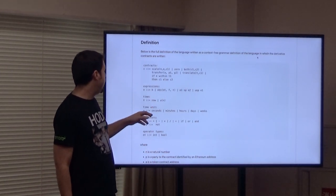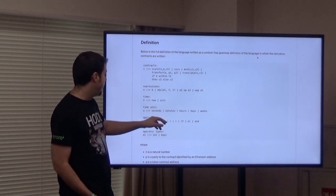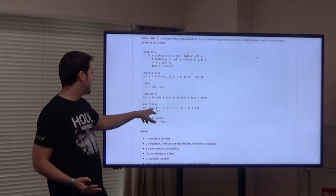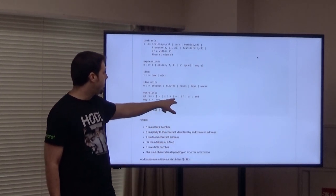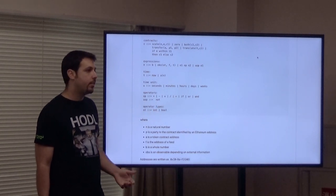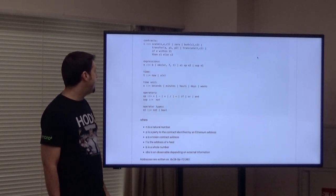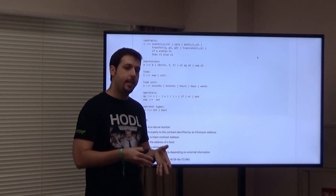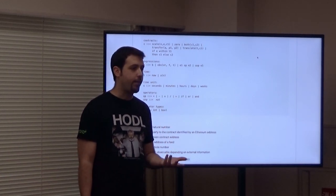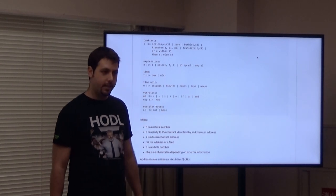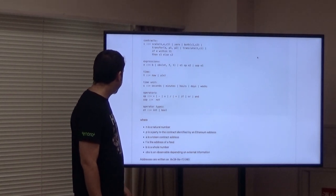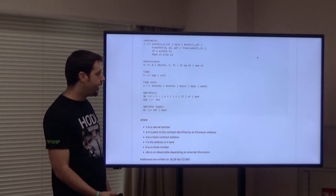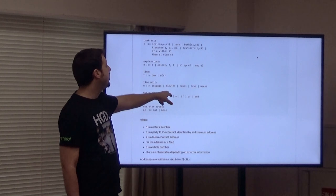Expressions can be a number or an operation between two expressions like 'five plus five', with normal operators plus greater-than, less-than, and, not. There's also 'observable', which is the way to describe entering data on-chain — it's very similar to how you use oracles. In our case, observables are representative of oracles within our framework. Types are int and bool. Time can be 'now' for immediate execution, or with units of seconds, minutes, hours, days, or weeks.